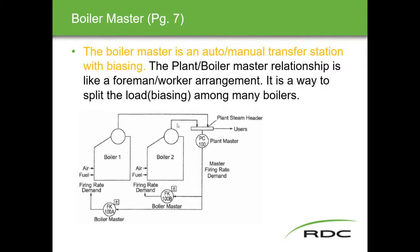The plant master / boiler master relationship is basically like a foreman and worker arrangement — a way to split the load through biasing among many boilers. You could have one boiler at 100%, two boilers at 50% each, three at 33%, or one at 70% and one at 30% — any combination, giving you flexibility in how you run the system.